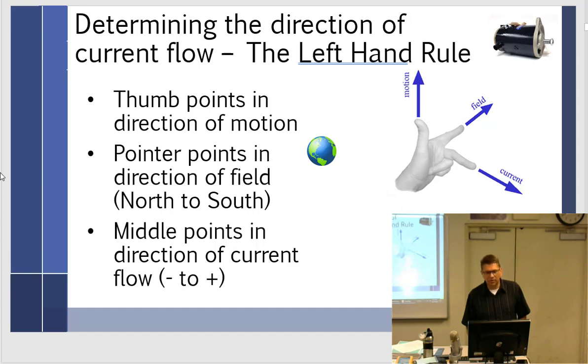We talked about the left-hand rule of thumb to figure out what it's going to look like as this happens. You guys have to remember this. The thumb is the motion, this is the field, that's the current. Thumb points in direction of motion, pointer finger points in direction of field, north to south, and middle finger points in direction of current flow. Minus to plus, which is electron flow.